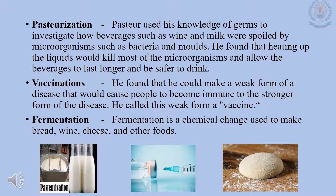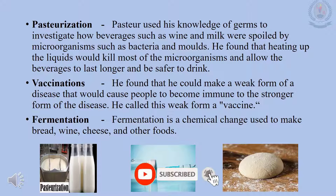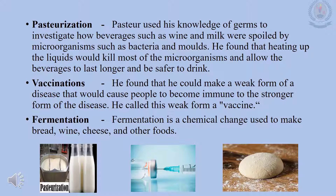Vaccinations: Pasteur continued to investigate diseases. He found that he could make a weak form of a disease that would cause people to become immune to the stronger form of the disease. He called this weak form a vaccine. Fermentation is a chemical change used to make bread, wine, cheese and other foods.